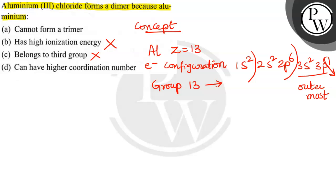Next, aluminium cannot form a trimer. Yes, it cannot form trimer. It is forming dimer, and that is not the reason connected to this question.